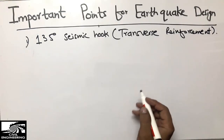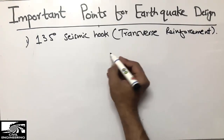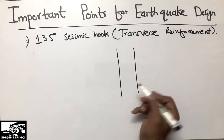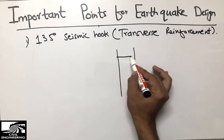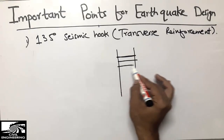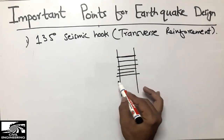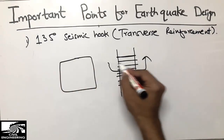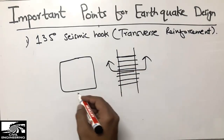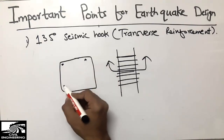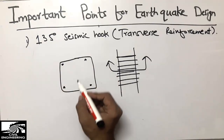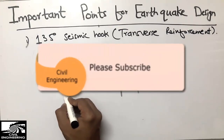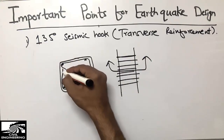For example, taking a column: these are the longitudinal bars, and I am going to confine them using ties. In a front view these are the ties, and in a cross-section view you can see the ties wrapping around the longitudinal bars. The ties must be bent to 135 degrees.